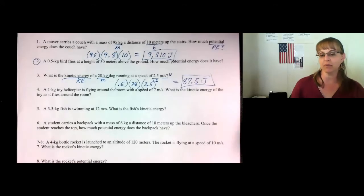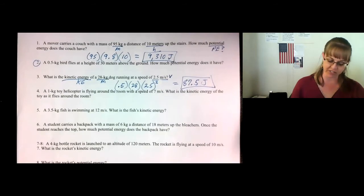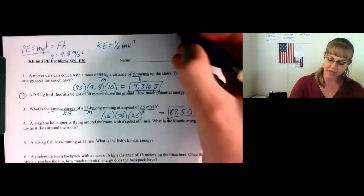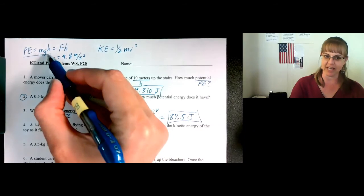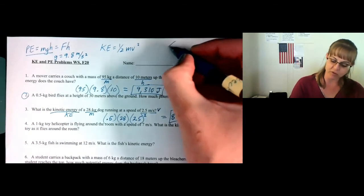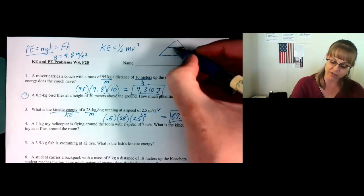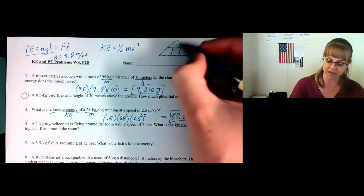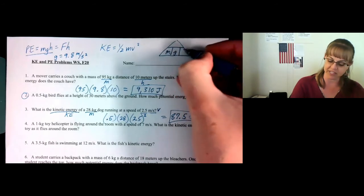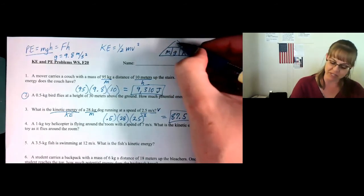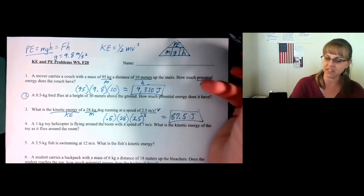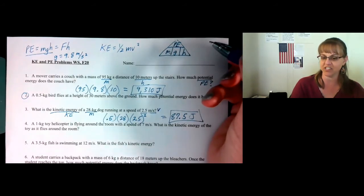Number 9 is one of those problems where you have to solve to find your answer. Remember, potential energy is mgh. So if you put it in a triangle, m times g times h, it turns out all three of those can go on the bottom of the triangle, because they are multiplied. That means potential energy is going to go on the top. Now you can finish solving.